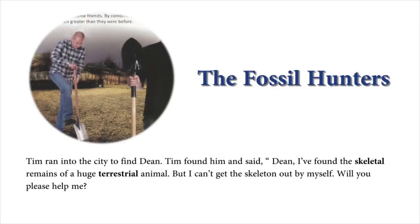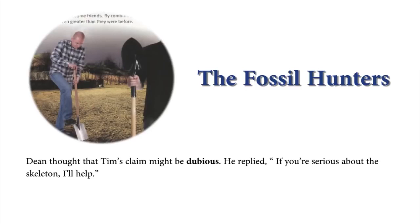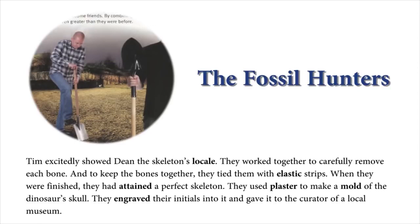Tim ran into the city to find Dean. Tim found him and said, 'Dean, I found the skeletal remains of a huge terrestrial animal, but I can't get the skeleton out by myself. Will you please help me?' Dean thought that Tim's claim might be dubious. He replied, 'If you're serious about the skeleton, I'll help.' Tim excitedly showed Dean the skeleton's locale. They worked together to carefully remove each bone, and to keep the bones together, they tied them with elastic strips. When they were finished, they had attained a perfect skeleton. They used plaster to make a mold of the dinosaur's skull. They engraved their initials into it and gave it to the curator of a local museum.